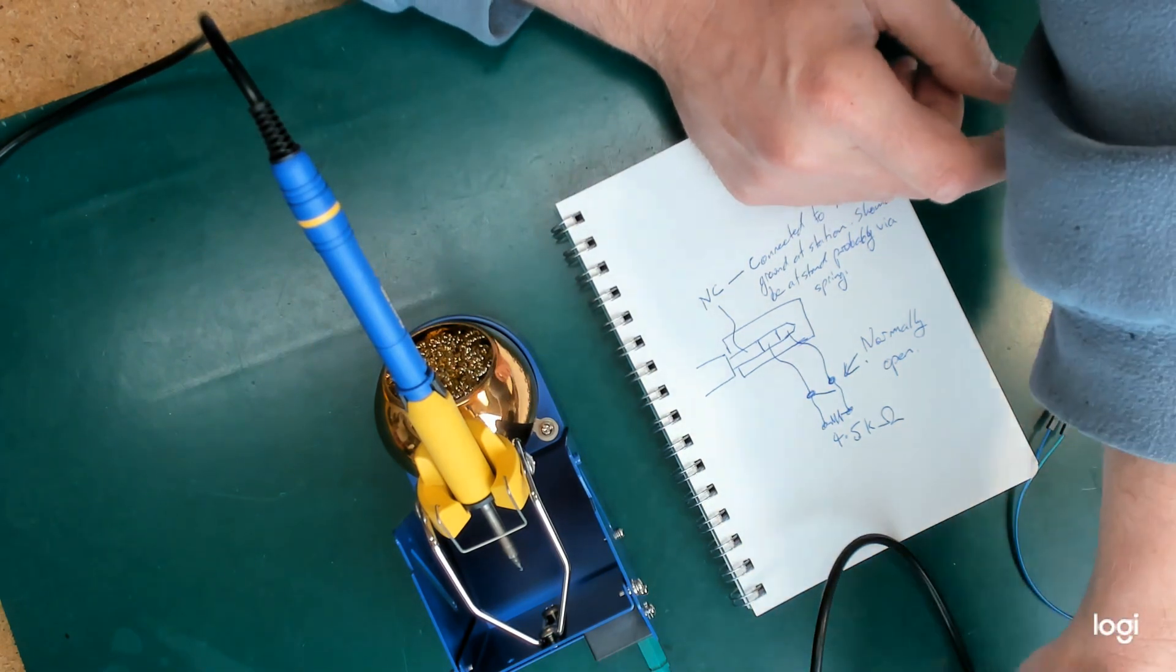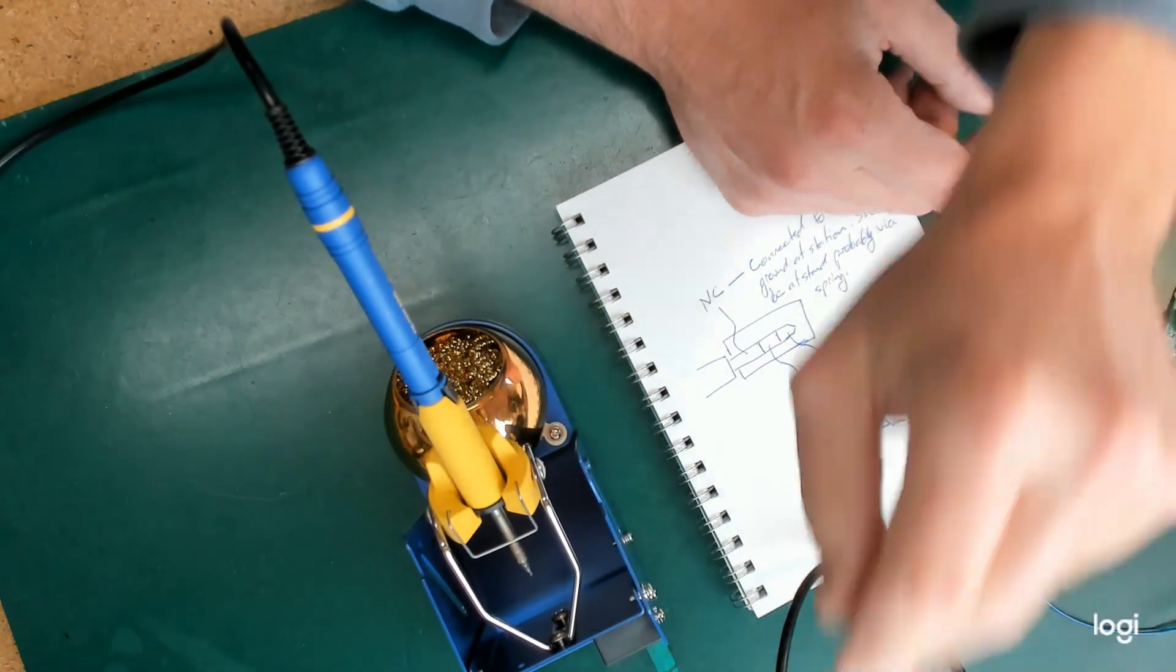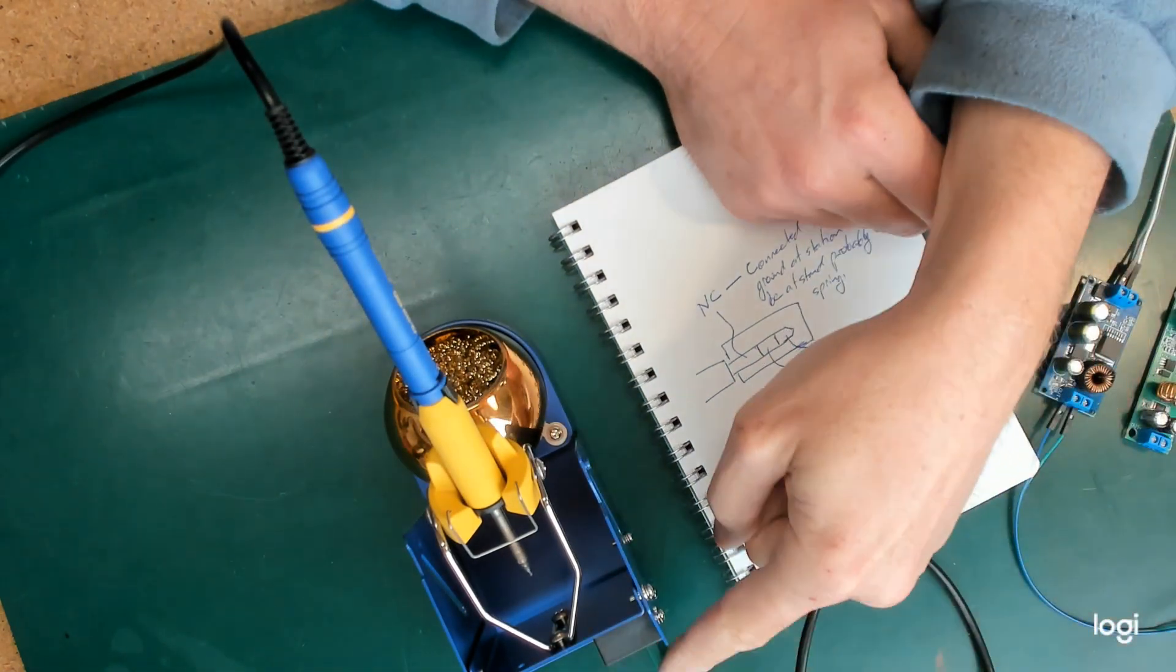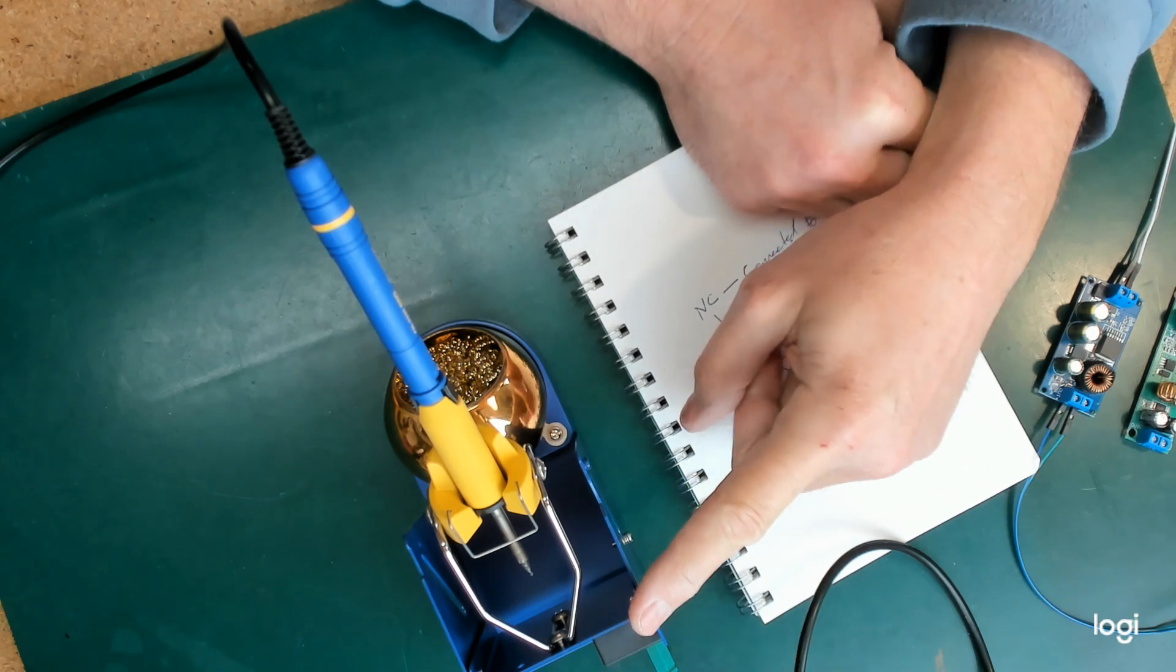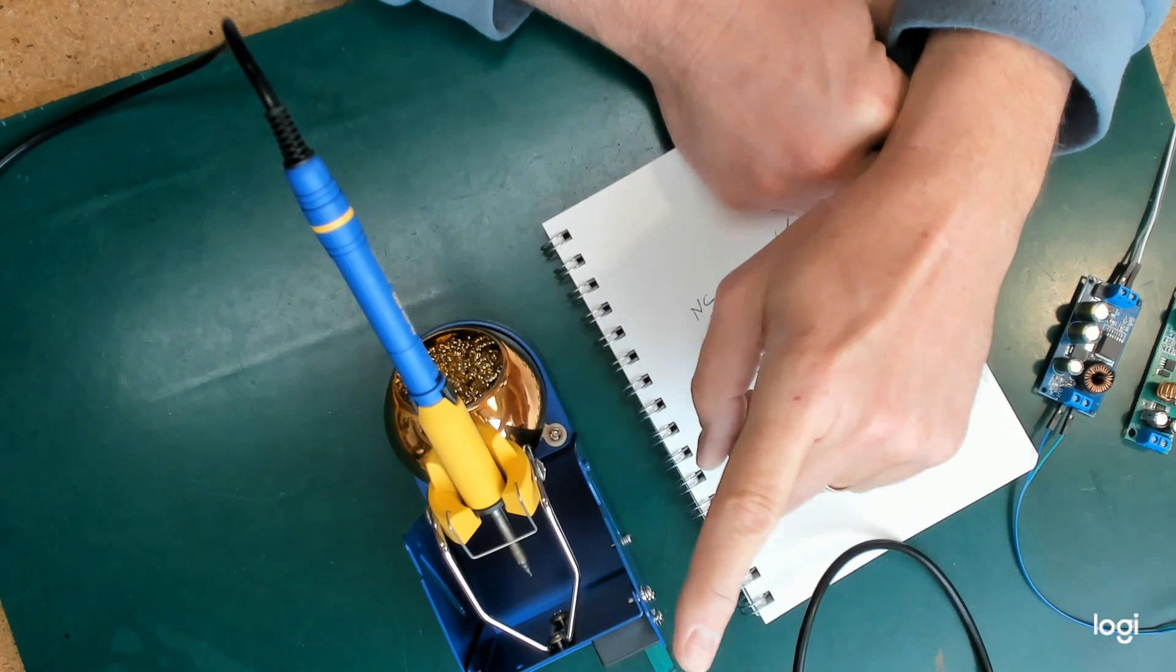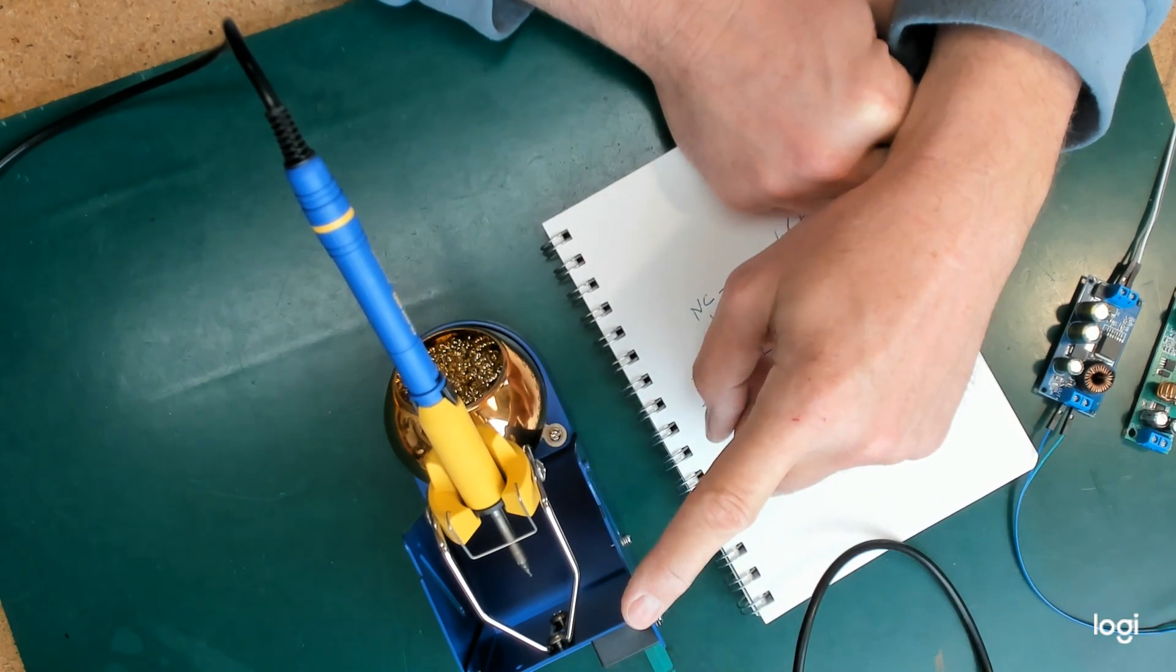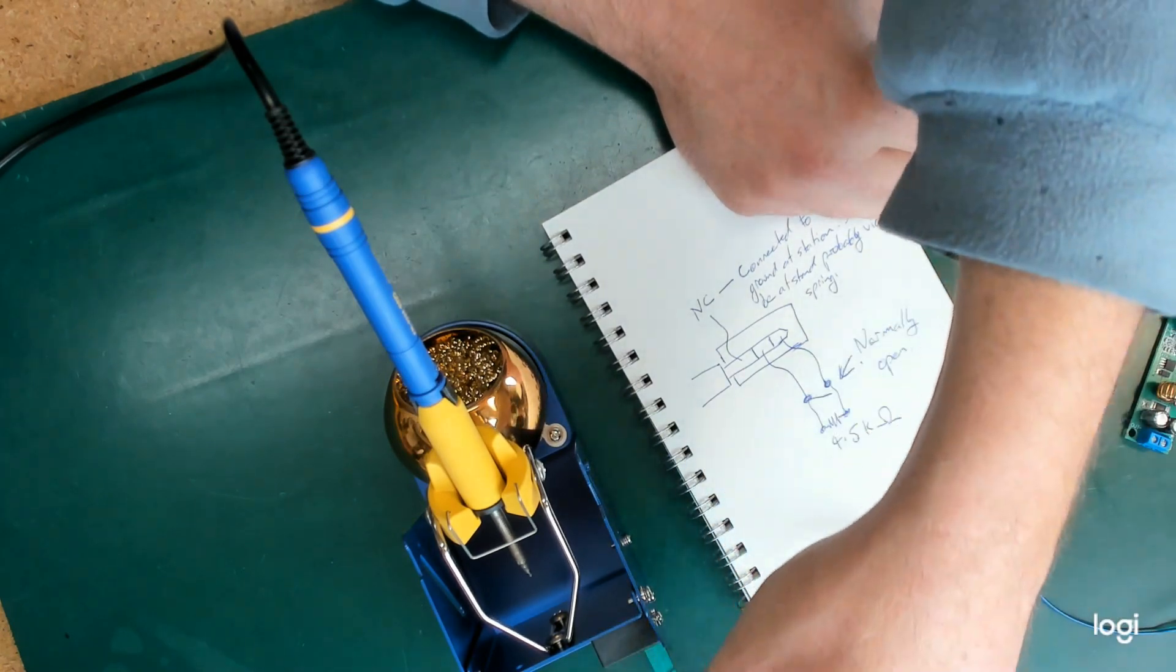The station connects what would be common on the 3.5mm stereo plug to mains ground, and it comes through to the stand where it is left unconnected. I think there may be an option in some of these for that to go back to the front,